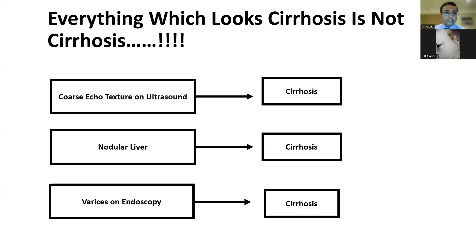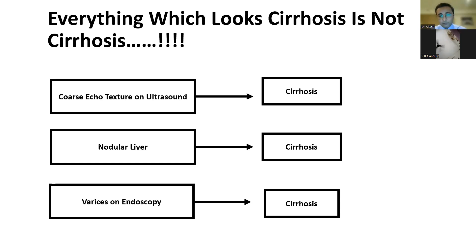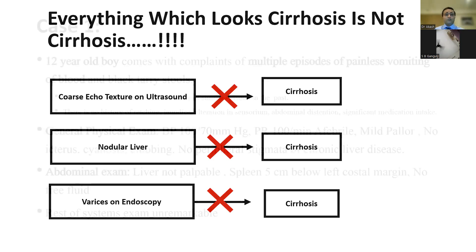My fundamental message — which is the last message coming in the beginning — especially to young trainees, is that everything which looks like cirrhosis is not cirrhosis. This is a very common finding: you get a coarse echotexture on ultrasound and the patient is labeled as cirrhosis; you get a nodular liver on ultrasound and he's labeled as cirrhosis; you get varices on endoscopy and he's labeled as cirrhosis. But as we'll go on to see over the next 30 minutes, this is not always true.